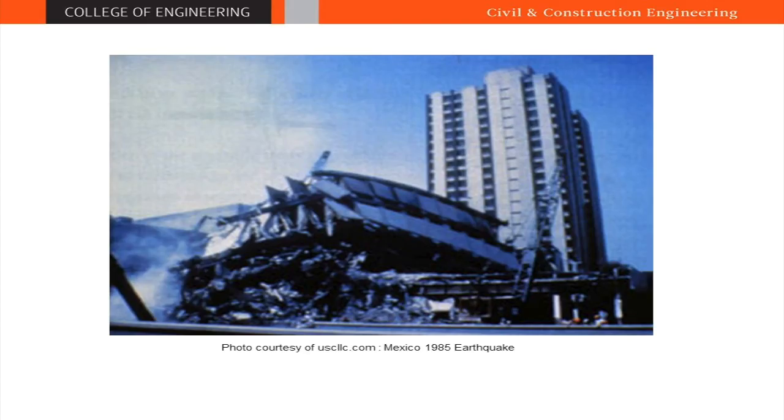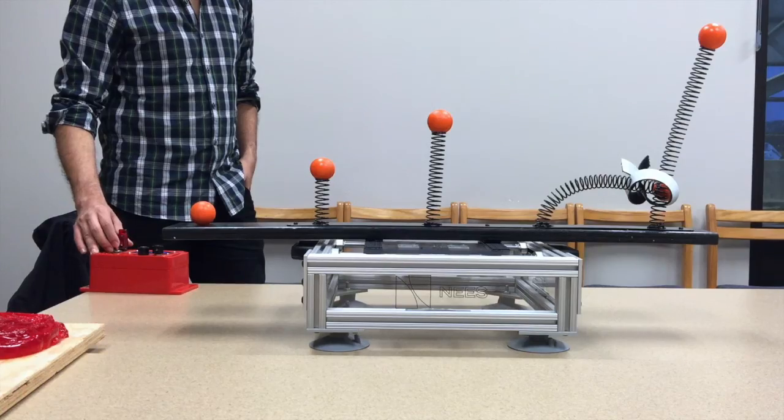This explains why in 1985, during the Mexico City earthquake, the mid-height buildings were severely damaged and the buildings taller than 15 stories and those shorter than 6 stories were much less affected.